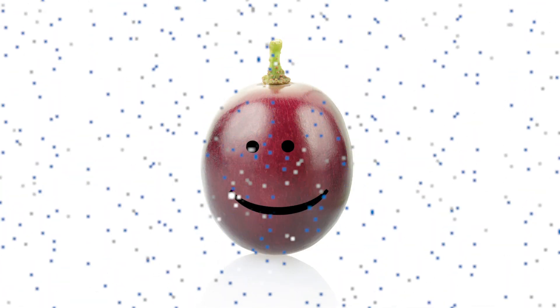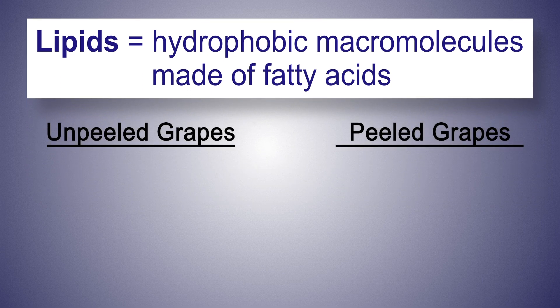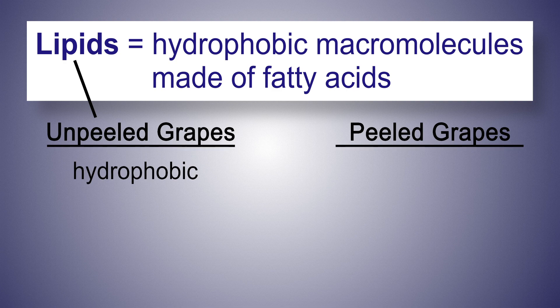Now that you have peeled your five grapes so they're clear on the outside with no skin on them, we're gonna explain why exactly we're dealing with peeled and unpeeled grapes. The waxy covering of a grape is there to protect the grape in nature from rain, from snow, anything that could harm it. The waxy covering is known as a lipid, which we've talked about many times in class. A lipid is also part of a cell membrane.